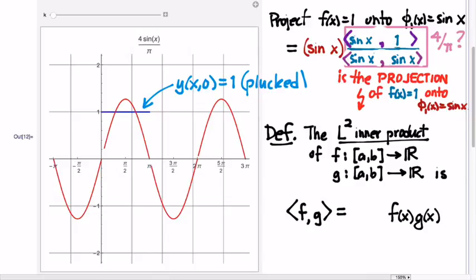Linearity I think we can check off. We can also check off symmetry, because multiplication of real numbers is a commutative operation. So here, f comma g and g comma f are going to give us the same result, because multiplication of real numbers is commutative.